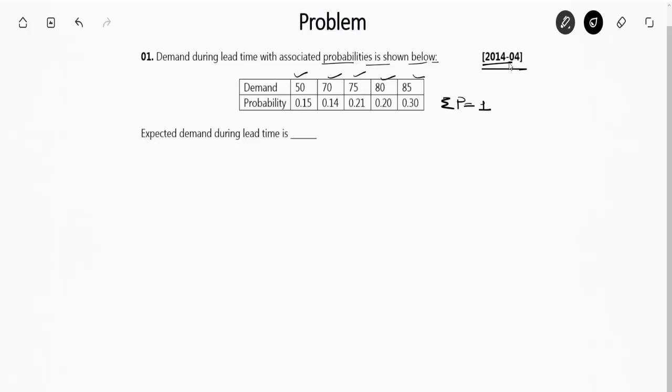Now expected demand during lead time, EDD, will be probability times the demand, which is 0.15×50 + 0.14×70 + 0.21×75 + 0.2×85 + 0.3×85. Actually, this is 0.2×80.